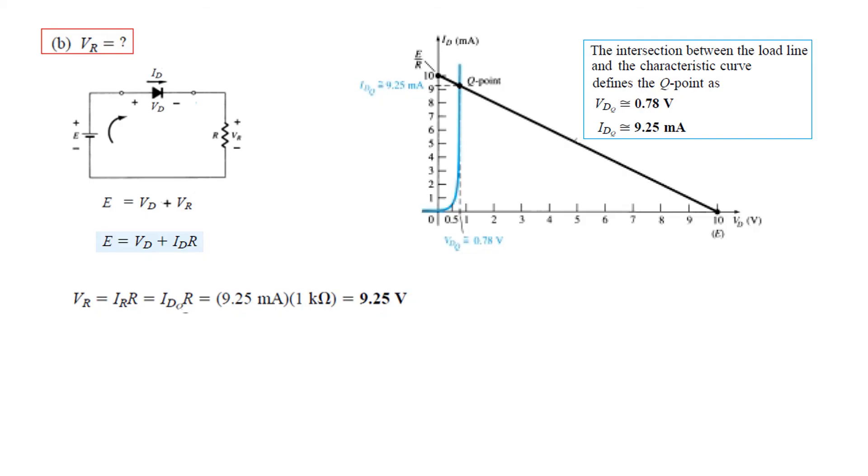Another way of finding Vr is by using this formula, that is Vr is E minus Vd. E is 10 volt, VdQ we found from here is 0.78. So the value is 9.22. They should be same but there is some difference because of the reading error of the graph. So that is acceptable.